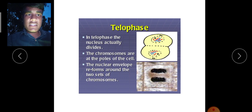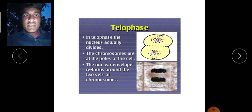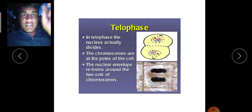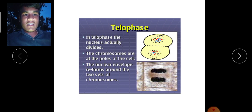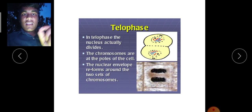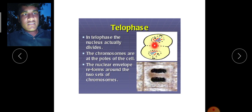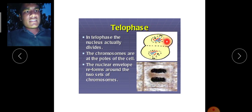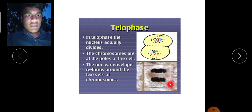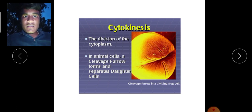In anaphase the chromosomes are divided and they move towards opposite poles. In telophase, the divided chromatids move towards each opposite pole. The nucleolus and nuclear envelope re-form at each pole. You can see the divided chromatin materials moving towards opposite poles and again the nucleolus and nuclear envelope re-form. This is how telophase takes place.